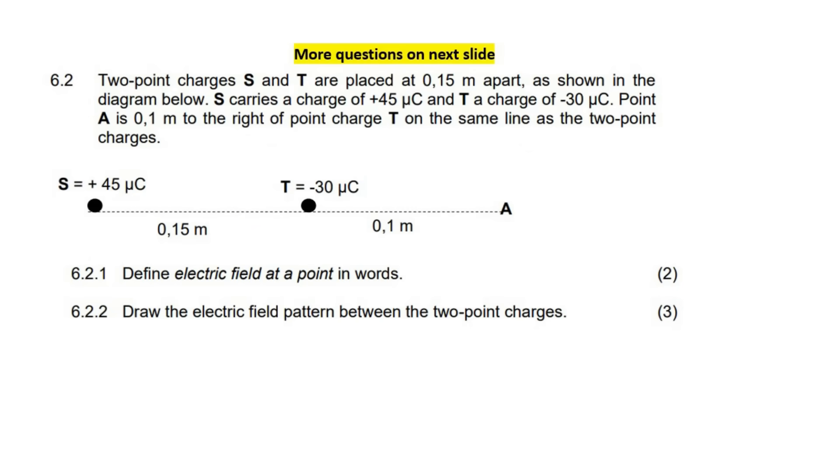So the first question says define electric field at a point. Remember what electric field is? It's got two formulas that we have on our formula sheet. You've got the kq over r squared formula, and then you also have the f over small q formula. When we are doing calculations with electric field, most of the time we're going to be using this one, but from the definition you would actually use this one to help you remember.